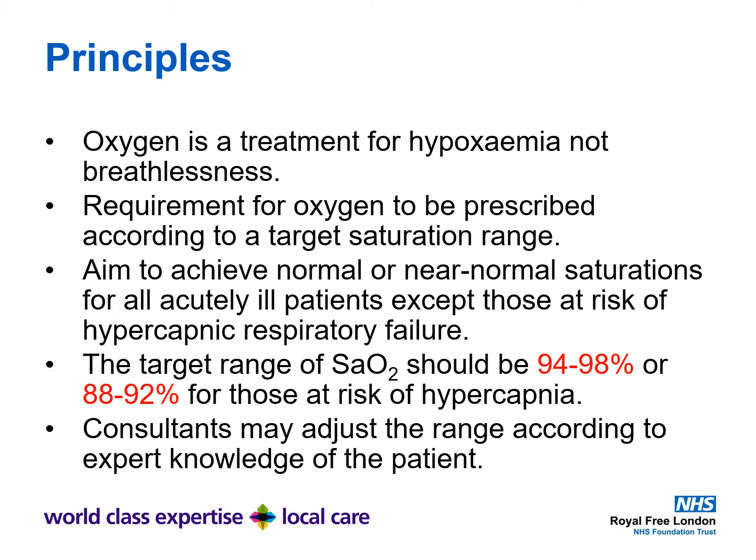Oxygen should be prescribed according to a target saturation range. The aim is to achieve normal or near-normal saturations for all acutely ill patients, except those at risk of hypercapnic respiratory failure. The target range should be 94 to 98%, unless specified otherwise, such as 88 to 92% for those at risk of hypercapnia.